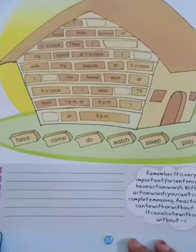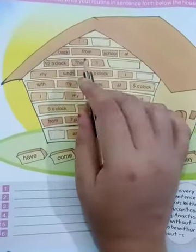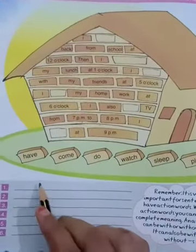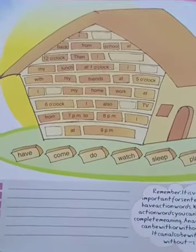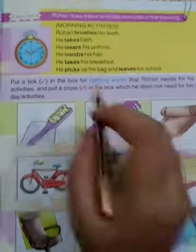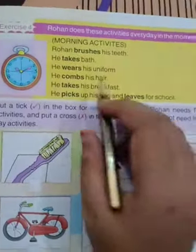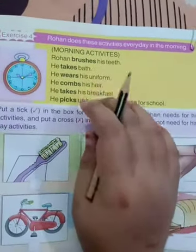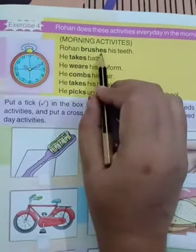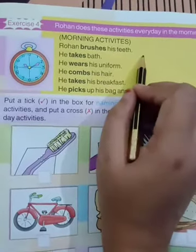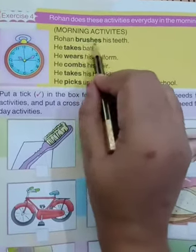After that, the same sentences which I have filled here — the same sentences you will write. Now next exercise, exercise number four from page number 31. Firstly read the sentences: Rohan brushes his teeth, he takes bath — brushes is an action word, takes is an action word.